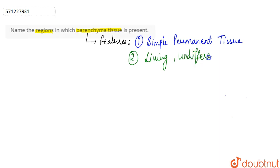The third point or feature that we can see here is that it is a type of ground tissue. Also, its cell walls are made up of cellulose.